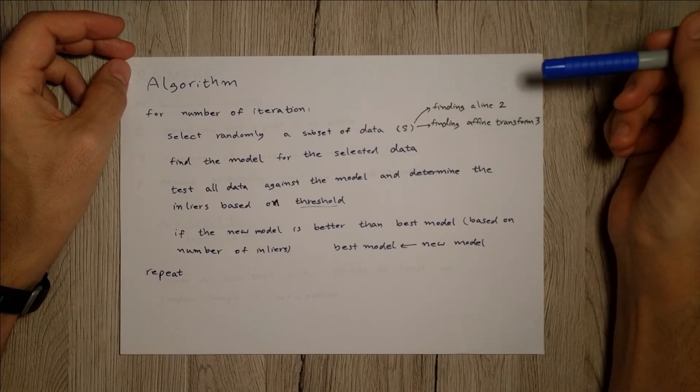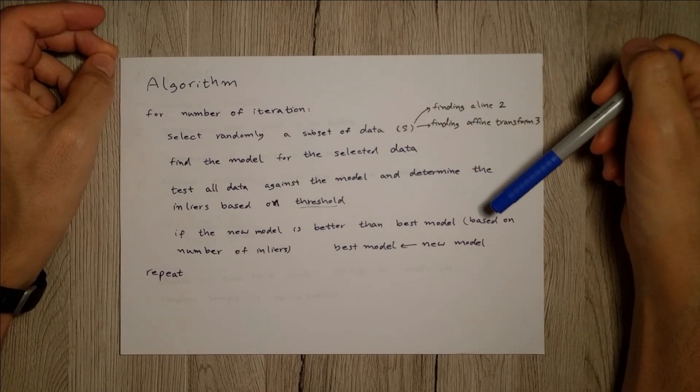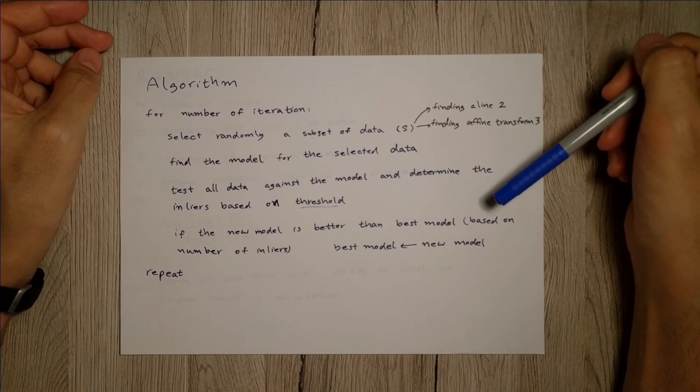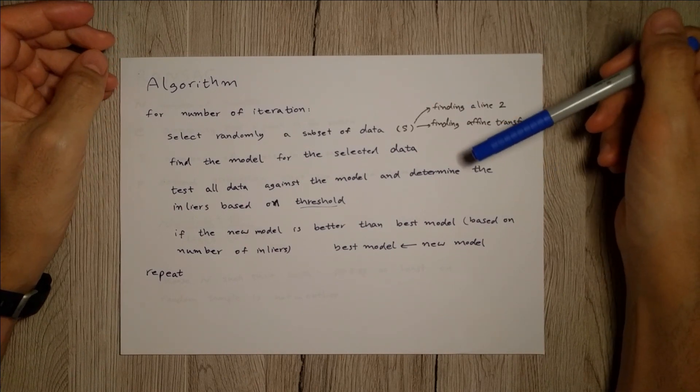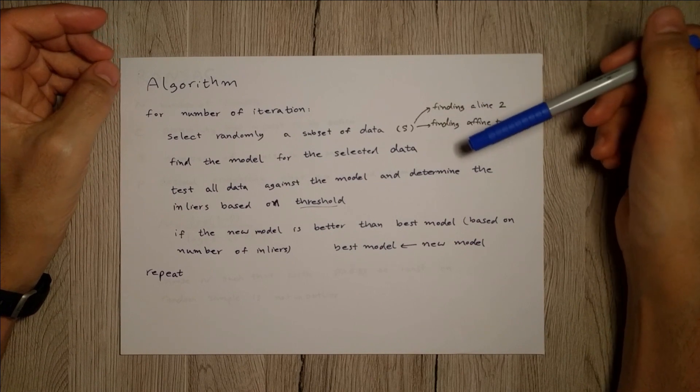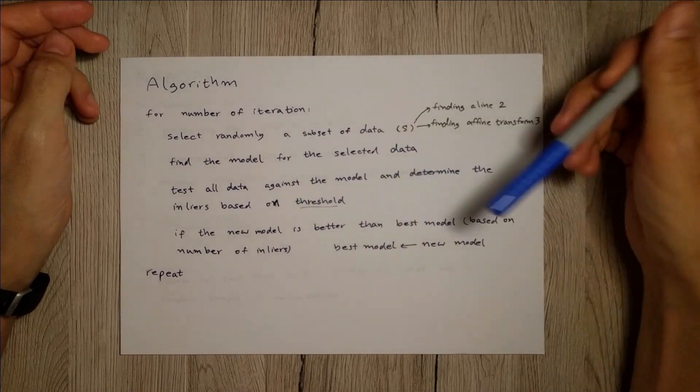Then if the new model is better than the best model that we had so far based on the number of inliers, if the number of inliers is more, then we will replace the best model with the new model. Otherwise we just continue.